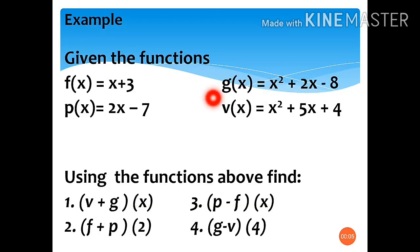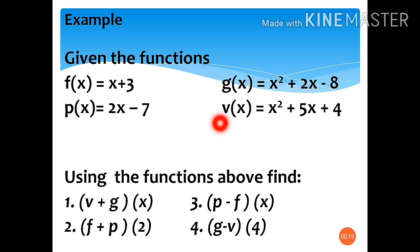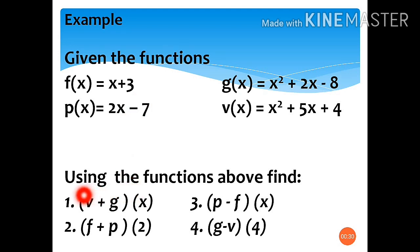Given the functions: f(x) = x + 3, p(x) = 2x − 7, g(x) = x² + 2x − 8, and v(x) = x² + 5x + 4. Using these functions, let us solve: number 1, (v + g)(x); number 2, (f + p)(2); number 3, (p − f)(x); and number 4, (g − v)(4).